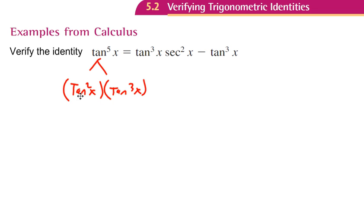Now I can replace my tangent squared of x with secant squared minus 1. So it's going to be secant squared of x minus 1, so that's why I just replaced tangent squared of x with secant squared of x minus 1.